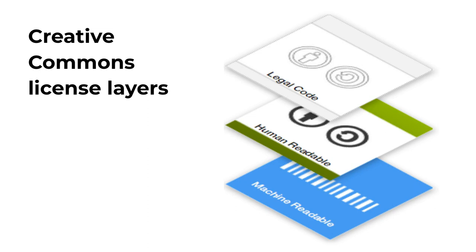Creative Commons Licenses are built using a three-layer design. One layer consists of legal code — this layer is what is legally enforceable in court. Despite the fact that this layer is written for lawyers, all responsible CC License users should be familiar with it. The middle layer contains the license terms expressed in terms that are easy for the average person to read and understand. The webpages that contain this middle layer are called Commons Deeds, and they are what we link to when we place a CC License on our work or use another creator's CC-licensed work.